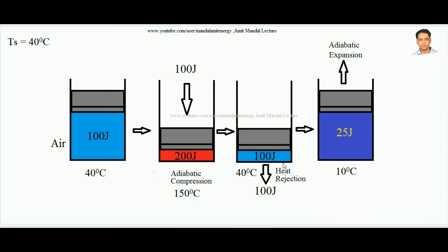Once the compressed air's temperature again attains the surrounding temperature, this air is adiabatically expanded. In adiabatic expansion, temperature always decreases, so the temperature falls below 40 degrees centigrade — suppose it falls to 10 degrees centigrade. In adiabatic expansion, work is done by the system against some load. The final energy content of the air becomes 25 joules.